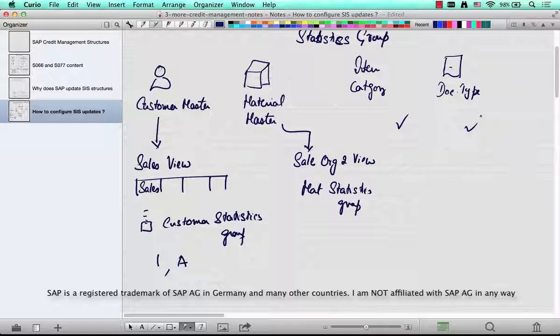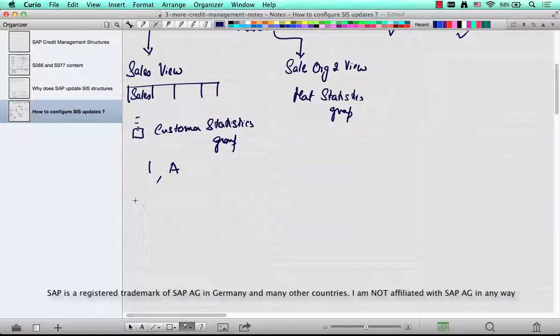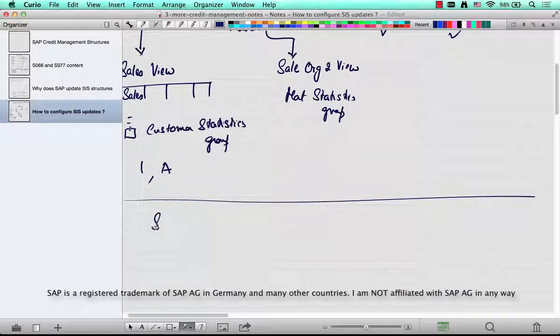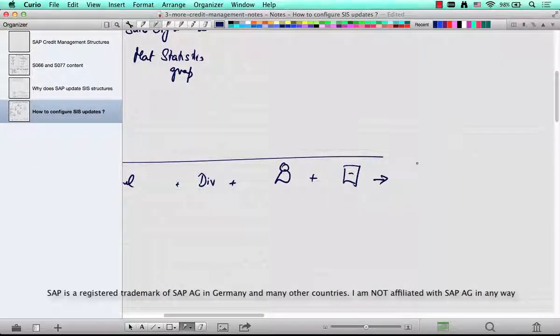Now what happens here is for a combination of sales org, distribution channel, division, plus customer statistics group, plus for example document type statistics group, a parameter called an update group is determined.